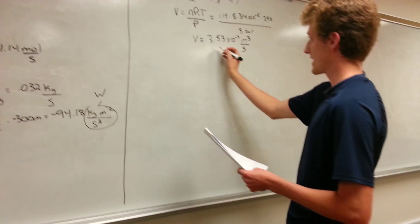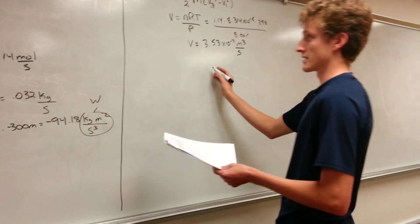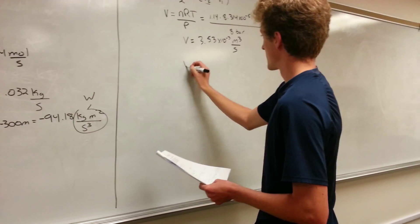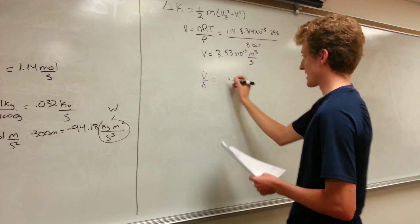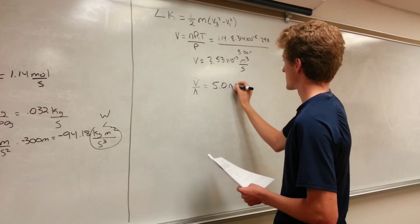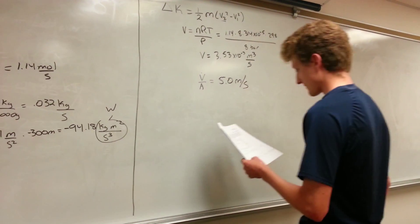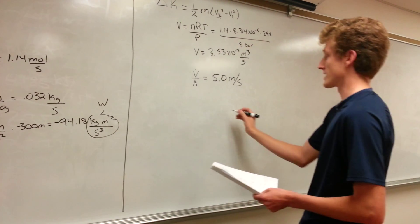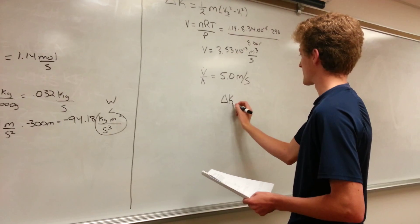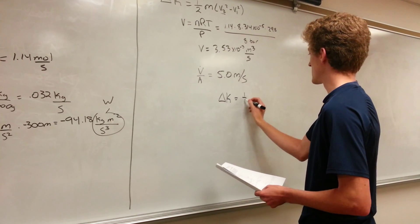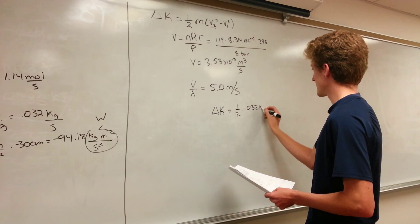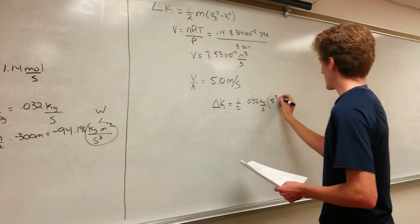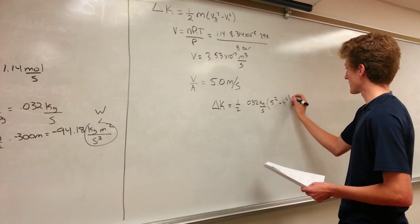We then divide that by our area that we calculated before. And that gives us a new velocity of 5.0 meters per second. We plug all this information back into the delta K equation. We get 0.5 times our mass flow rate times 5 squared minus 4 squared.